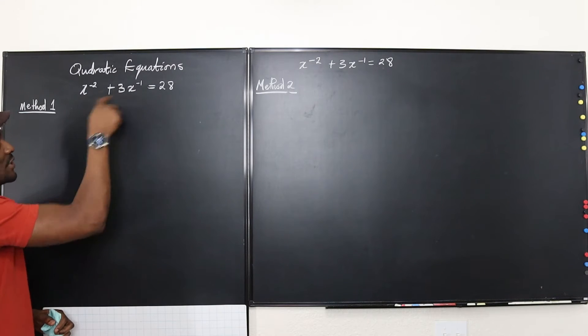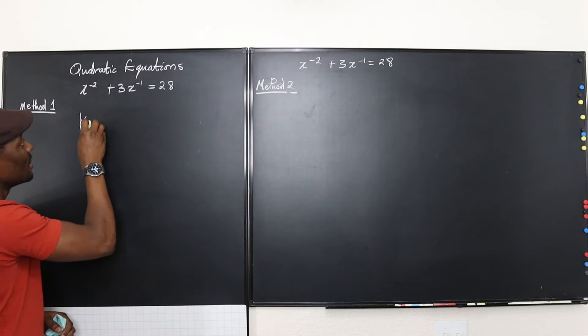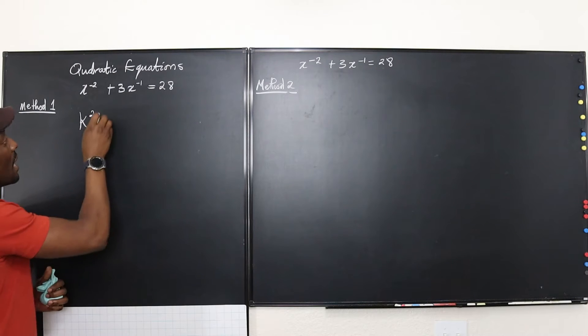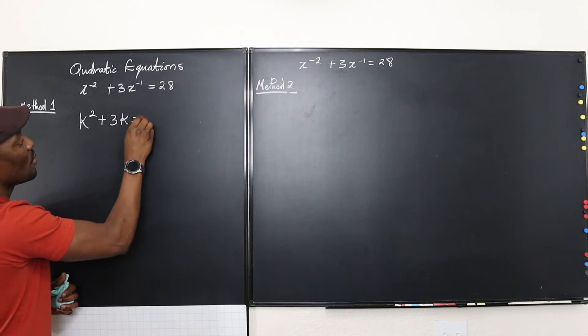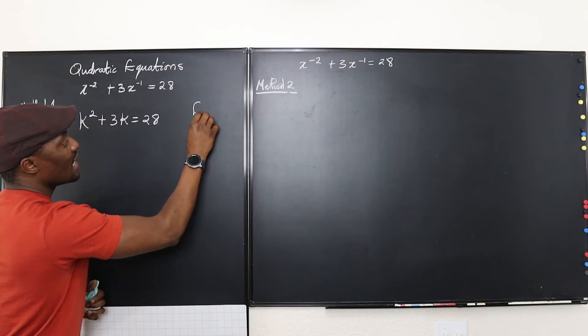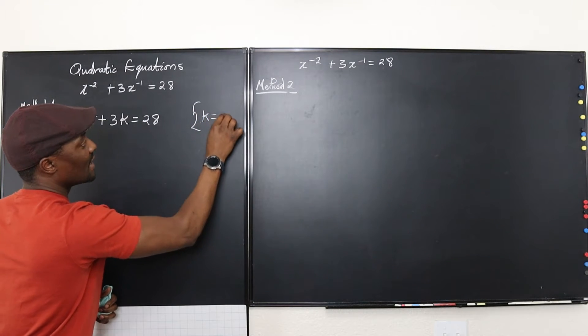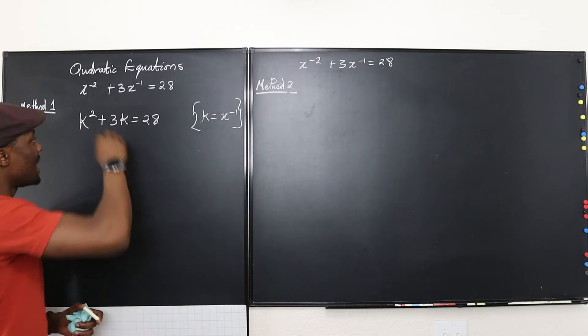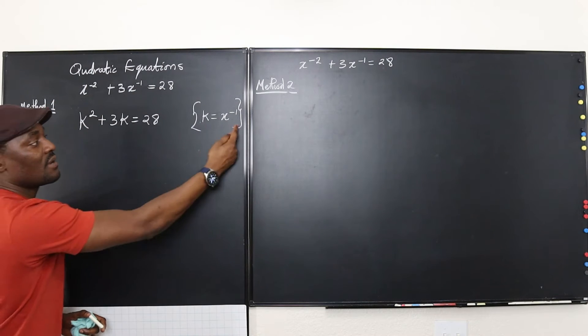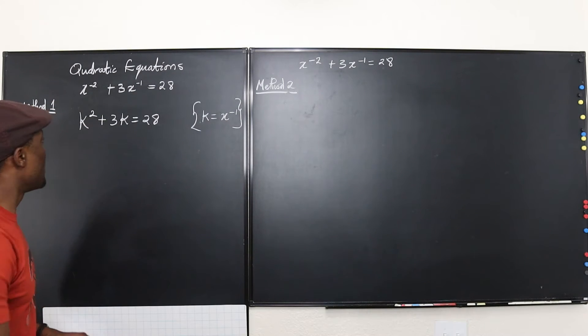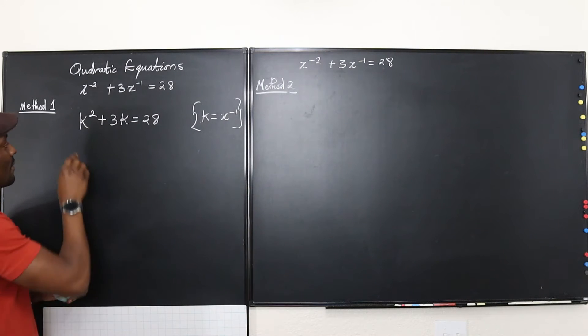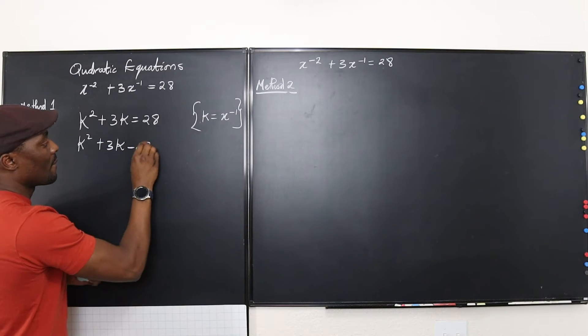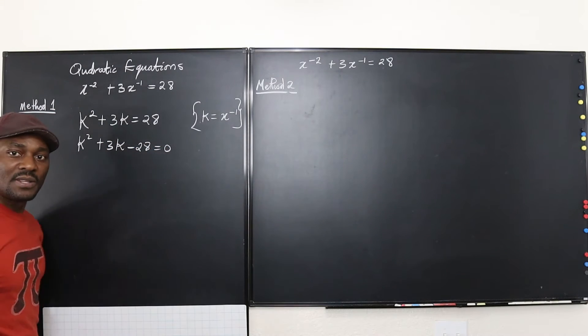So for method 1, it's the substitution. So it's going to be k^2 plus 3k equals 28. Now, what is k? My k is x^(-1). That's the substitution that I've made. Or you could write it at the beginning, let k be equal to x^(-1). And we can solve this. Let's move this here. We have k^2 + 3k - 28 = 0. We can factor this.